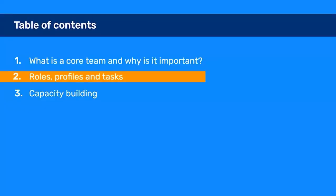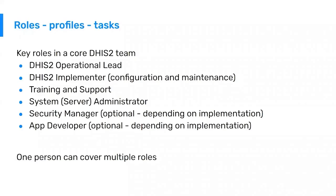We will discuss the roles, the profiles, and the tasks that are necessary to have in a DHIS2 team. The key roles in a core DHIS2 team are a DHIS2 operational lead — a manager of sorts that keeps the day-to-day running of the team going. They can serve as project manager and deal with stakeholders. You also need DHIS2 implementers, who are people that can do actual configuration and maintenance of the system itself.